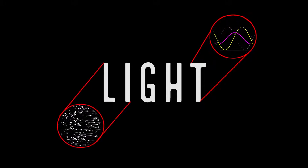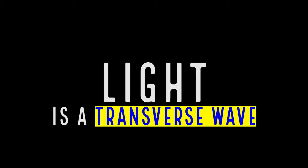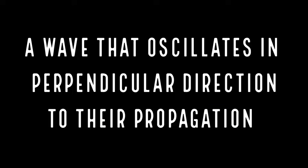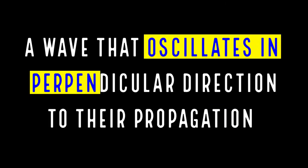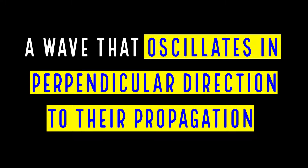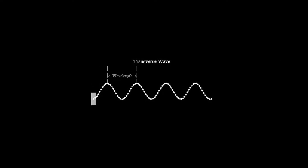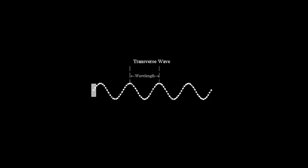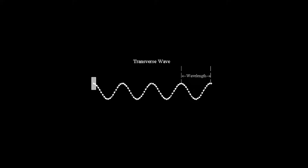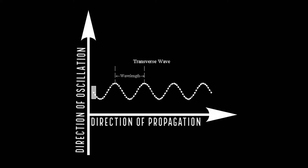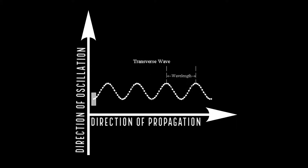Light comprises two things: it can be a wave or it can be particles. Light is a transverse wave. Transverse waves are those types of waves where the components oscillate in a perpendicular direction to their propagation. The components oscillate along the y-axis and the wave propagates along the x-axis. We can see this figure as a transverse wave — the direction of propagation is from left to right, but the direction of oscillation is from downwards to upwards.